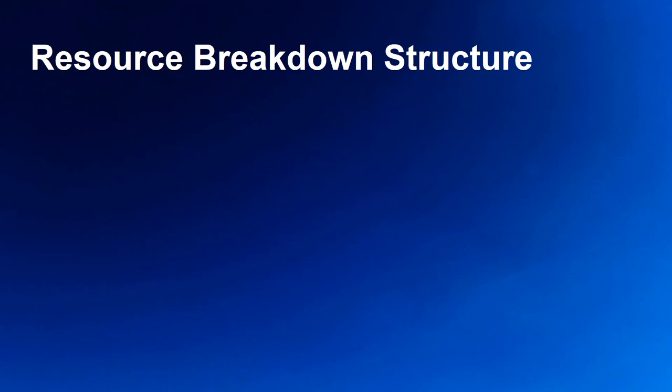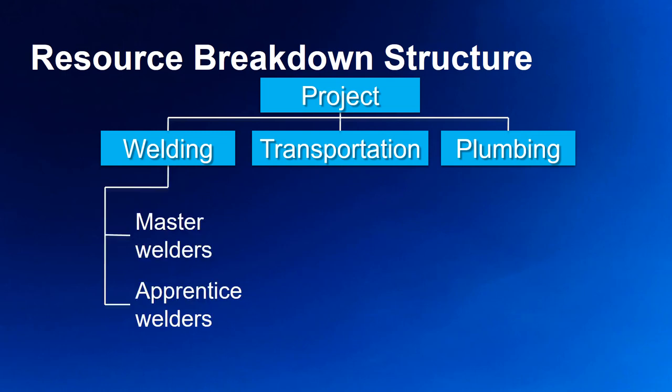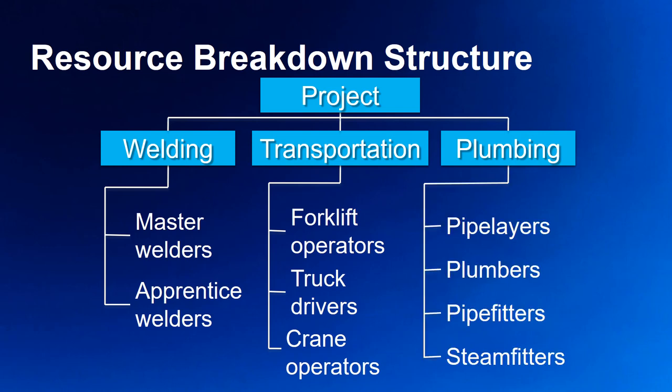The resource breakdown structure is our third output — a great way of showing required resources in a graphical format. An example would include human resources needed across categories such as welding (with a master welder and an apprentice welder), transportation, and plumbing. Note that we're only talking about categories here — we haven't yet assigned individuals. We would need to consider the different roles and types of resources required, which may include required licenses and certifications, skill or grade levels, and knowledge and experience.